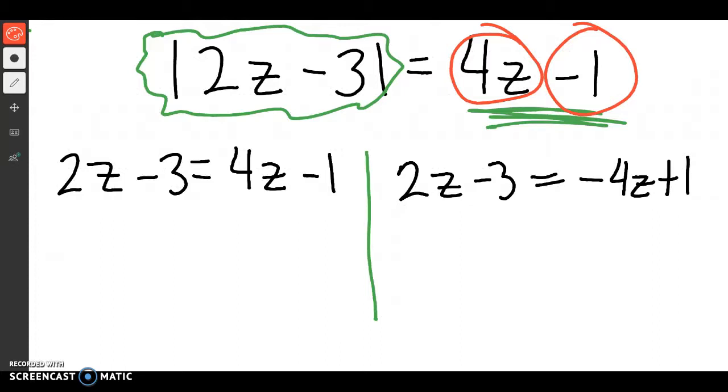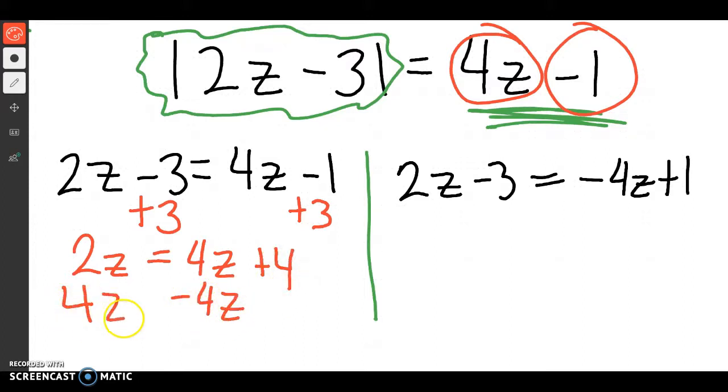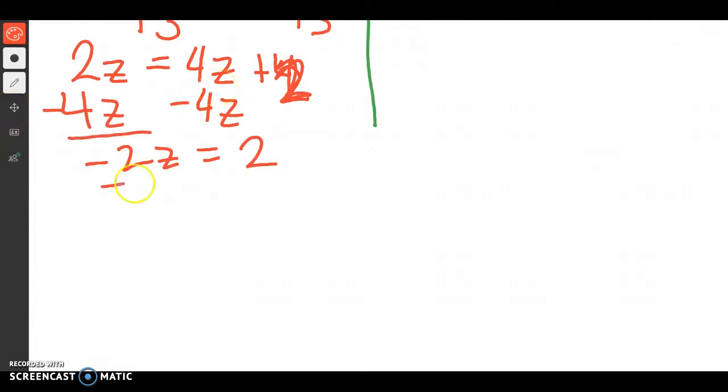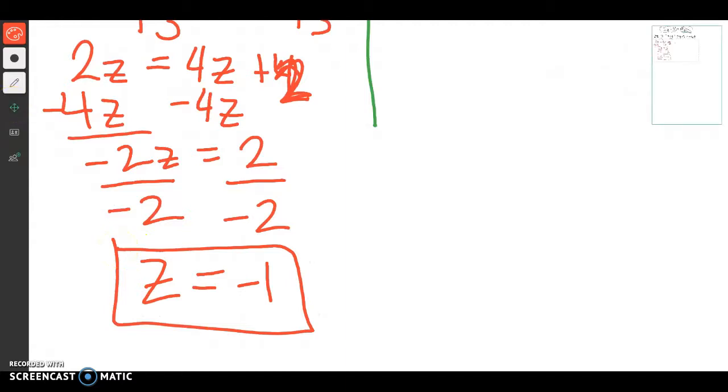And now we'll go through and solve. So this left-hand side, I'm going to add 3 to both sides of 2z equals 4z plus... oh, that should have been a 2, because negative 1 plus 3 equals 2. I'll subtract 4z, that'll give me negative 2z equals 2. I'll divide by negative 2, and z will equal negative 1. So that's one of my potential answers. We'll talk about why that's only a potential answer in a second.